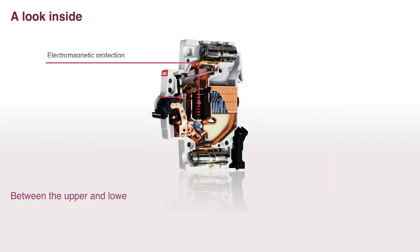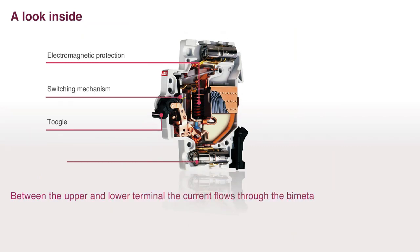A look inside. Between the upper and lower terminal, the current flows through the bimetal strip, the electromagnetic coil and the closed main contacts.